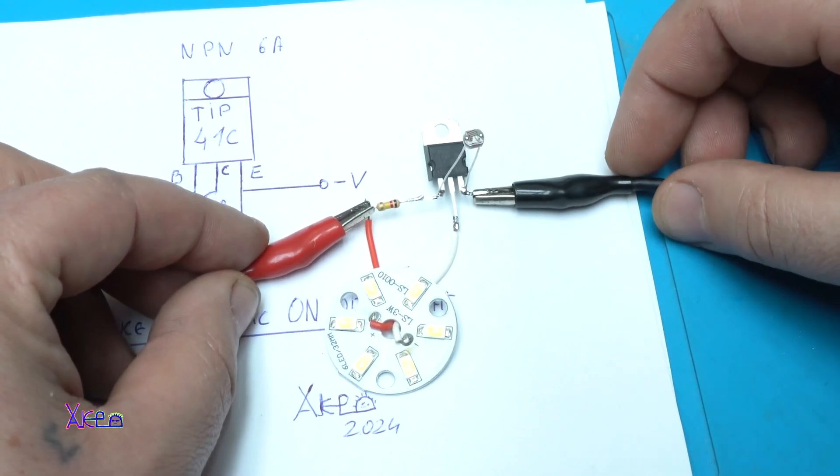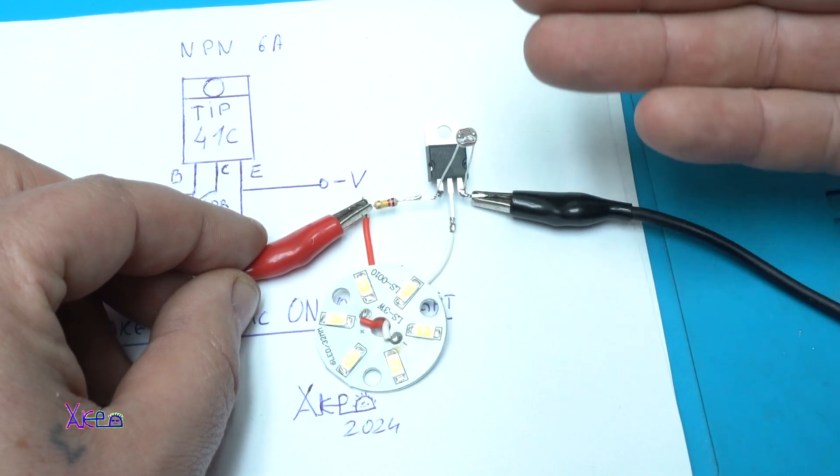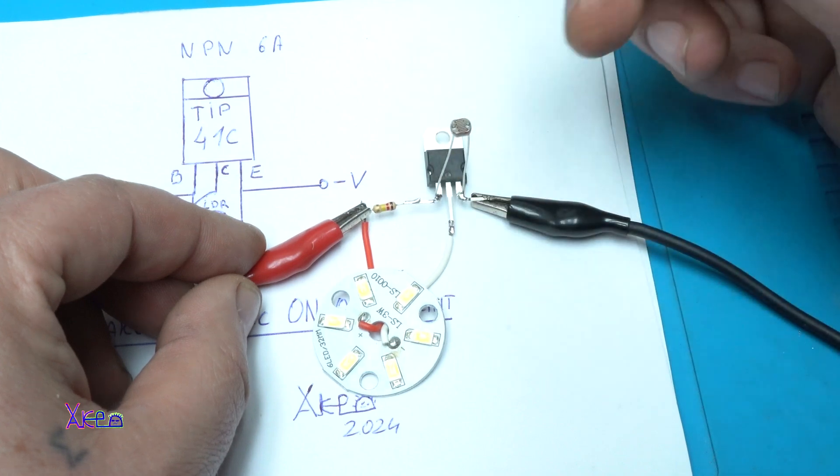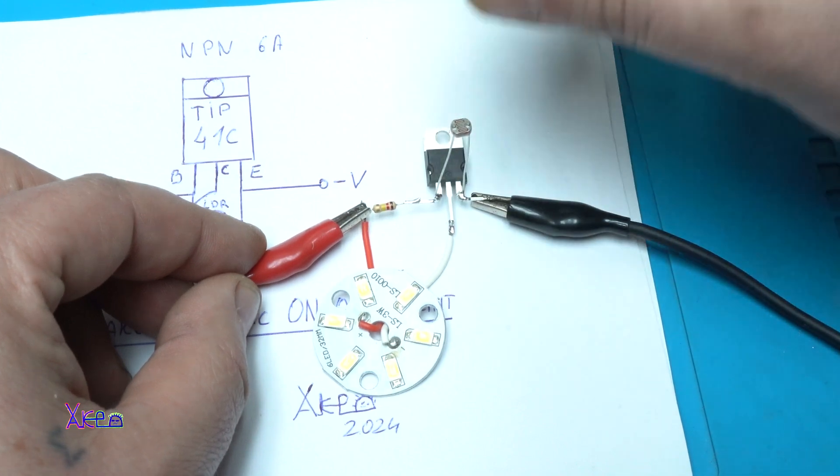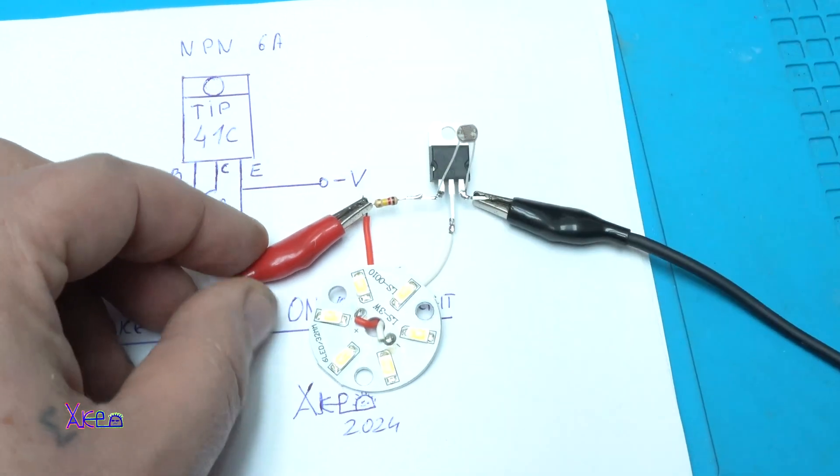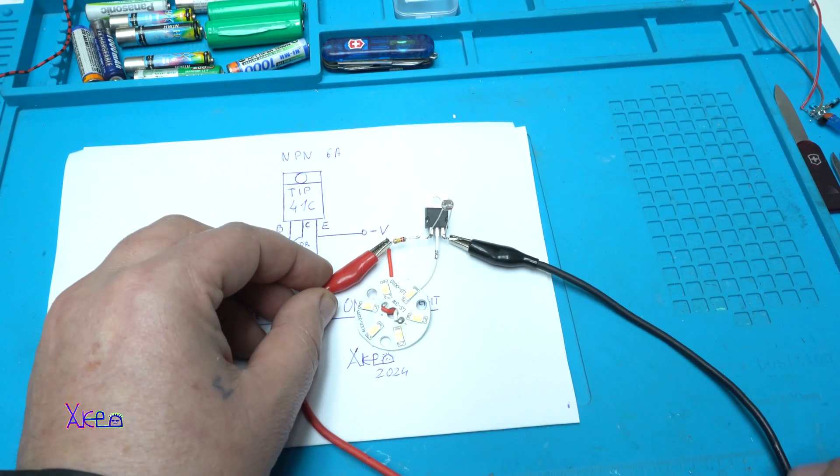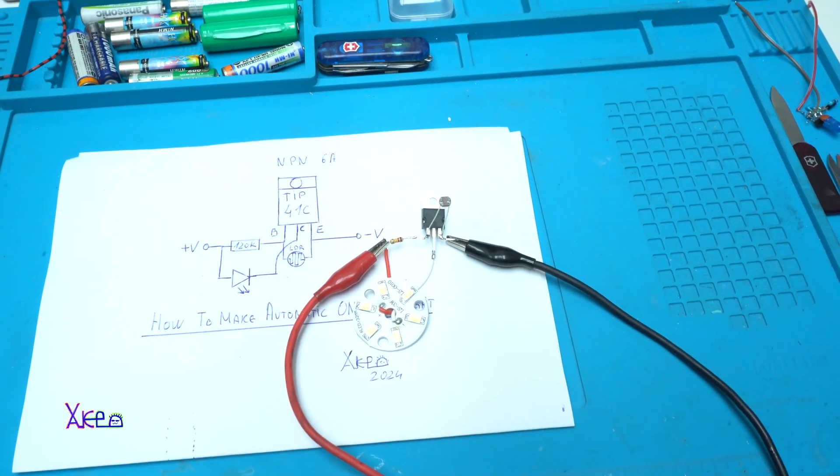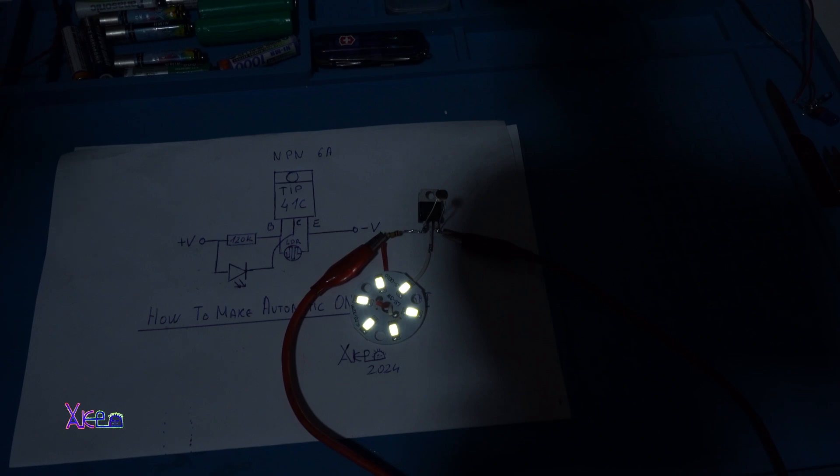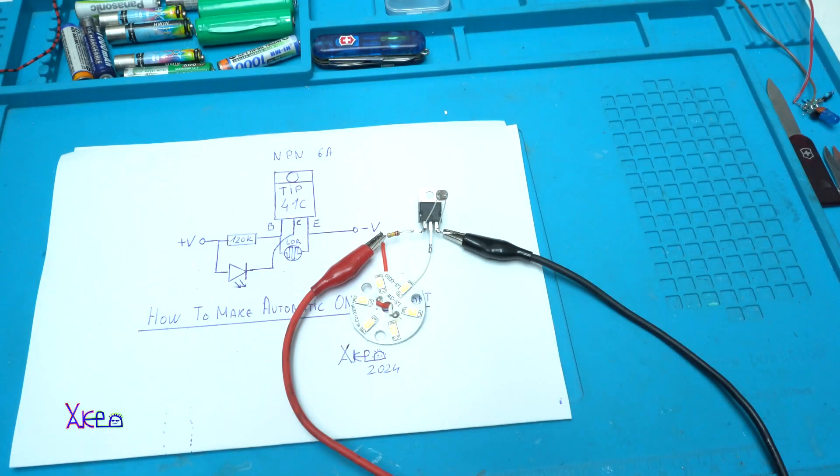And it's not working. Why? Because there is a light. The photoresistor is picking up the light, and it's working.